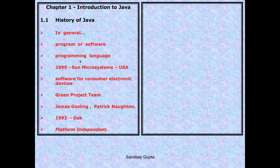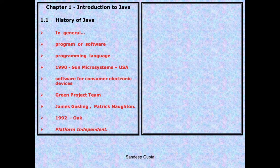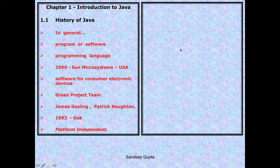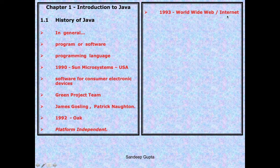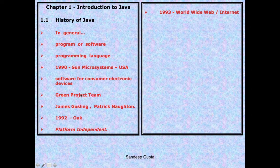So Oak was completely platform independent. I always tell my students that the world was a happy place before 1993, because all the problems we have today were born in 1993 - because in 1993 came the World Wide Web, also called the internet. One thing you should understand is that the internet was not invented by the Green Project Team - internet was invented by some other set of people. There was no relationship between the two.